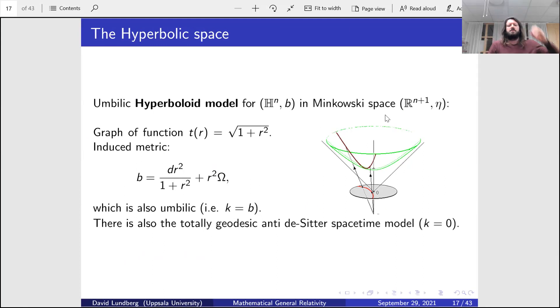For recollection, let me remind you that we have basically two main models for a hyperbolic space. One of them is the upper unit hyperboloid of Minkowski space, where we think of the graph of the function where the time coordinate is the square root of 1 plus r squared. The metric is just the following, and of course we do polar coordinates here in the base. Moreover, one can show that this is umbilic, meaning k, the second fundamental form, is just equal to the metric b.